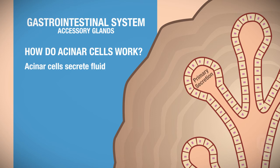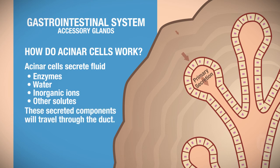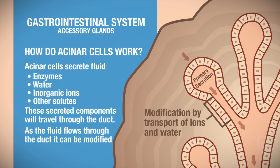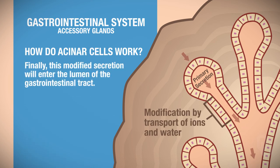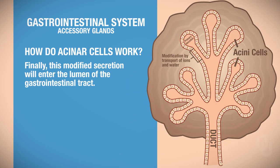The acinar cells secrete fluid, which could be enzymes, water, inorganic ions, or other solutes. When they secrete these things, as indicated by the arrows here, they flow through the duct, where they can be modified. After modification, the secretion enters the lumen of the GI tract. That's the basic structure of the accessory glands.